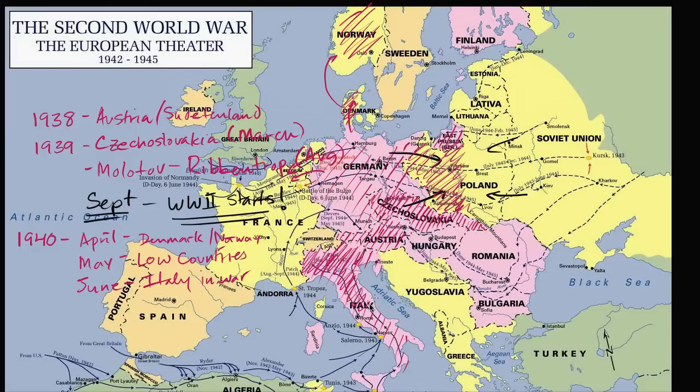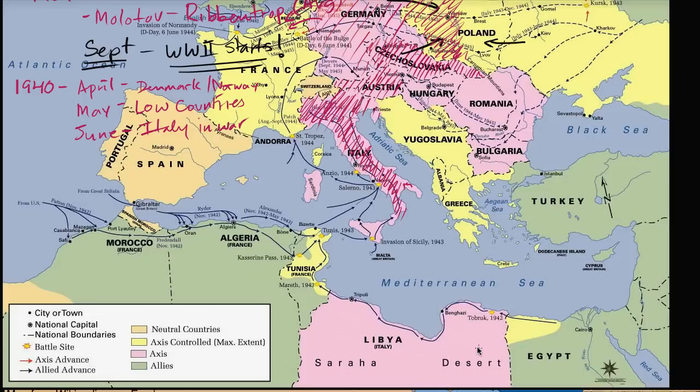As soon as Italy joins World War II, you start having all of these skirmishes out in North Africa between Italy's colonies — where they're ruling colonially in Libya — and Egypt, where the British are essentially in control. You start having all of these skirmishes across the Egyptian and Libyan border.